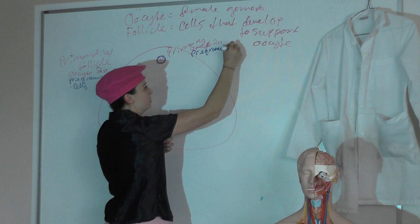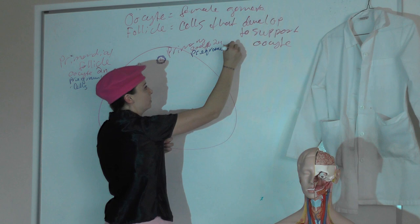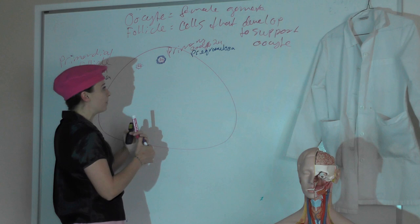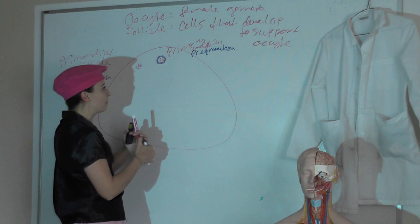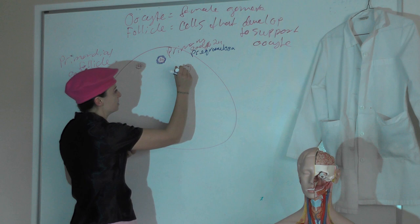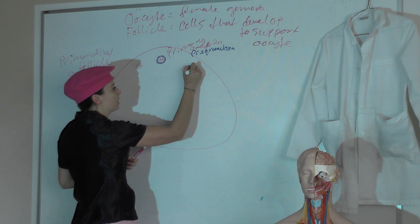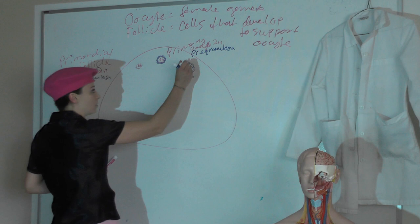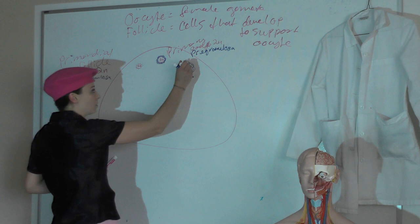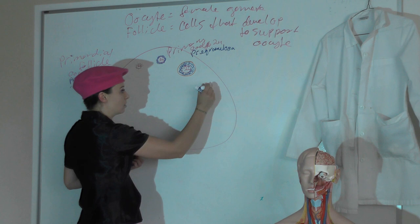Starting at puberty, these follicles are going to respond to FSH and continue developing, getting bigger and bigger. From puberty to menopause, they're going to develop into secondary follicles. In the secondary follicles, we're still 2N, arrested in meiosis. We're getting more and more granulosa cells. In our later secondary follicles, we'll see the appearance of a third cell type — our thecal cells. There will only ever be two layers of thecal cells, but we can have secondary follicles in various stages of development.